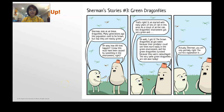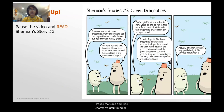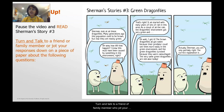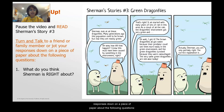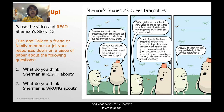Let's go ahead and warm up. Pause the video and read Sherman Story number 3 on the right-hand side. Turn and talk to a friend or family member, or jot your responses down on a piece of paper about the following questions: What do you think Sherman is right about? And what do you think Sherman is wrong about? Carefully read the dialogue between the two characters and see where they go right and where they go wrong.